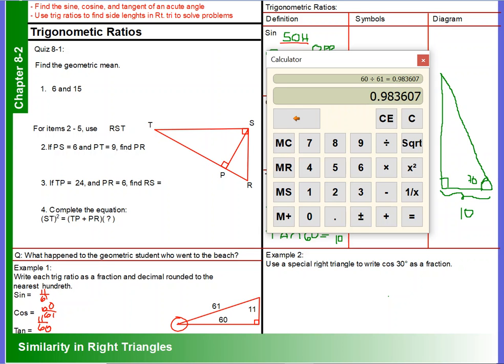So we know a 30-60 right triangle. So here we go. So here's our right triangle. This is 30. If this is A, this is 2A, which makes this A times the square root of 3.